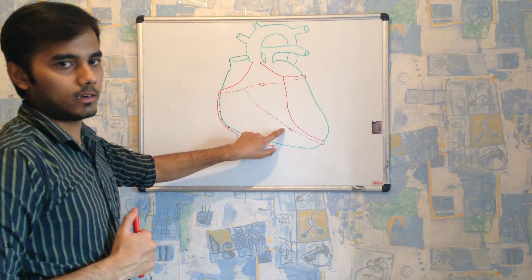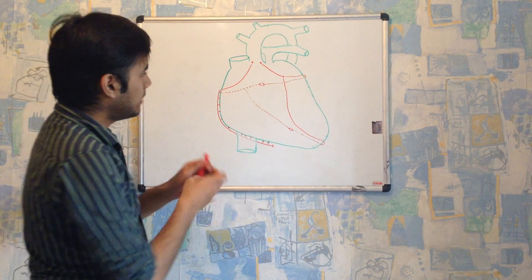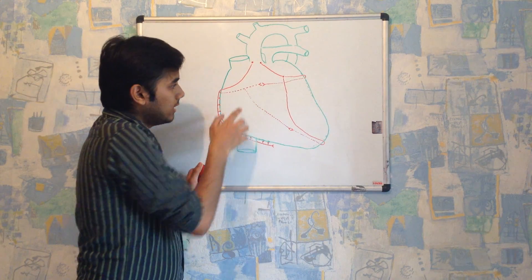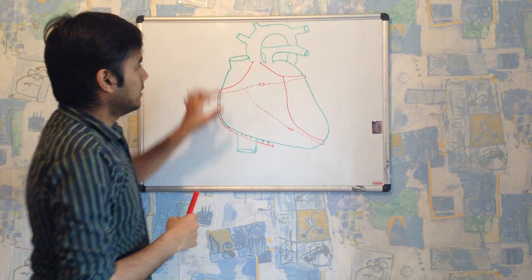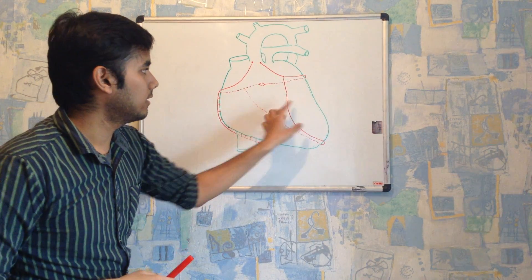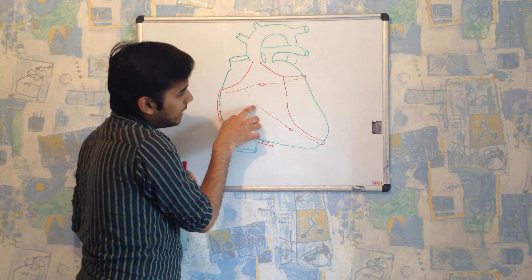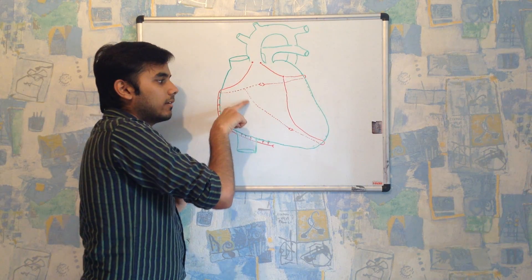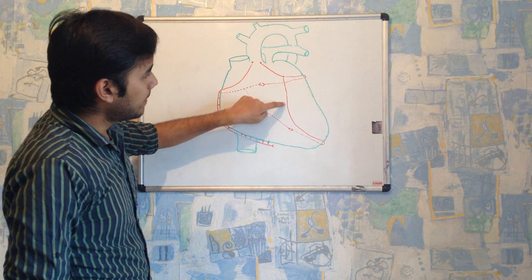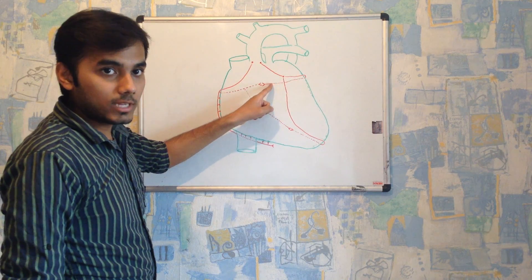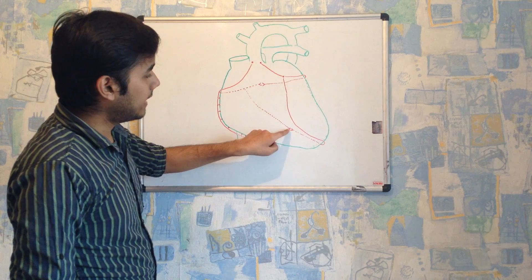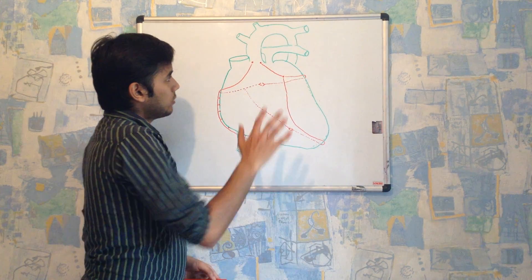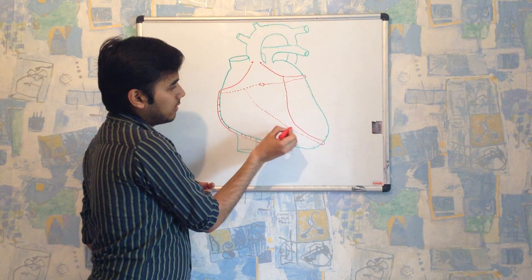This artery anastomoses with the posterior interventricular artery. It is called the posterior interventricular artery because it is passing posteriorly and passes all along the interventricular septum — the septum between the two ventricles. The other artery of the left coronary artery division passes directly downwards along the interventricular septum, curves back, and anastomoses with the posterior interventricular artery. Since it is passing on the anterior surface, it is called the anterior interventricular artery.